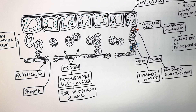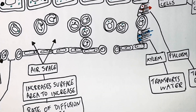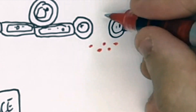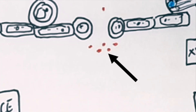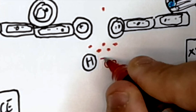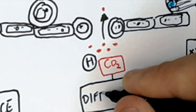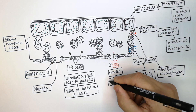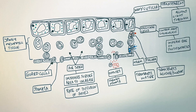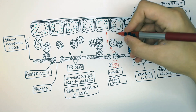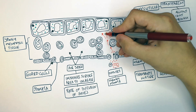We're now going to look at how carbon dioxide enters the leaf from the atmosphere through the stomata. Carbon dioxide exists in a higher concentration outside the leaf than inside the leaf, so it's a higher concentration of CO2 in the atmosphere. Therefore CO2 will diffuse through the stomata into the airspace, whereby it diffuses to the palisade cells from a high to low concentration.